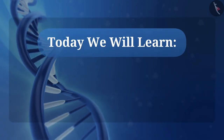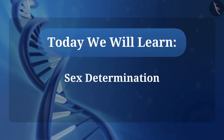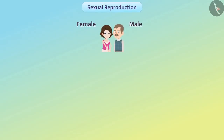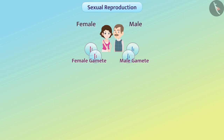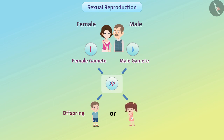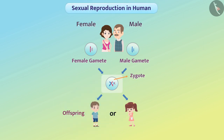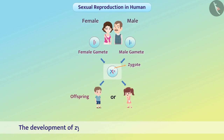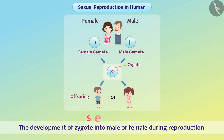Today we will learn about sex determination. We know that male and female participate in sexual reproduction. Since both sexes participate, the probability of offspring being a male or a female is equal. It is therefore interesting to know whether a zygote will develop into a male or a female. The development of zygote into male or female during reproduction is called sex determination.